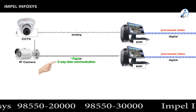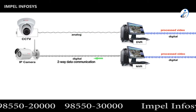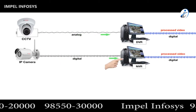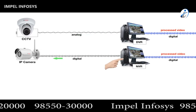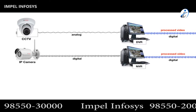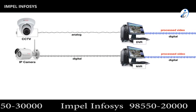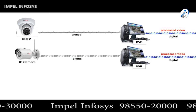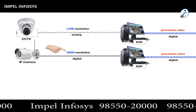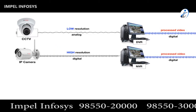The cameras on the system stream the digital video directly to an NVR — a network video recorder. The main reason why IP camera systems have become so popular is that the cameras can capture and deliver video in much higher resolution than analog to digital systems.